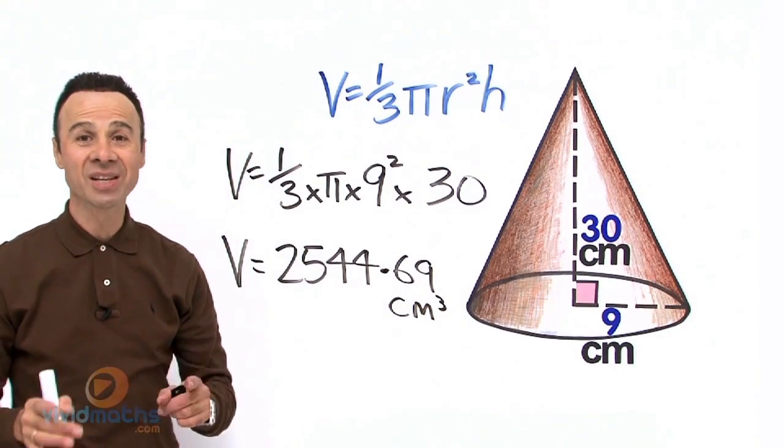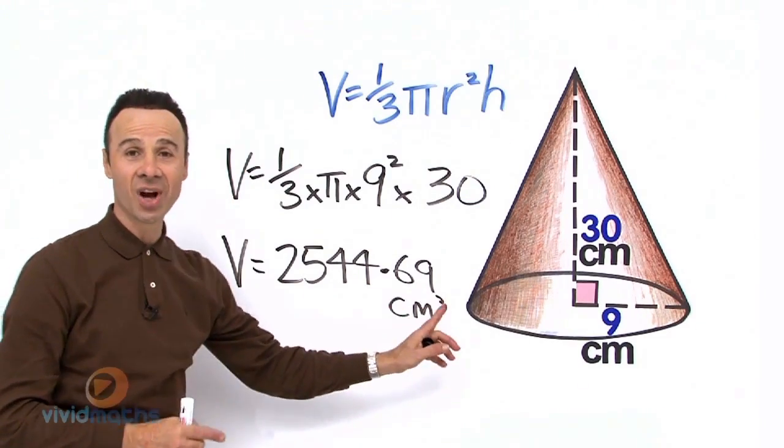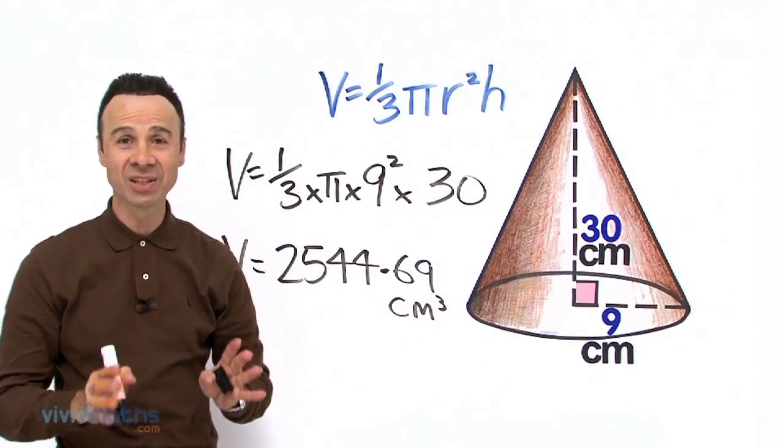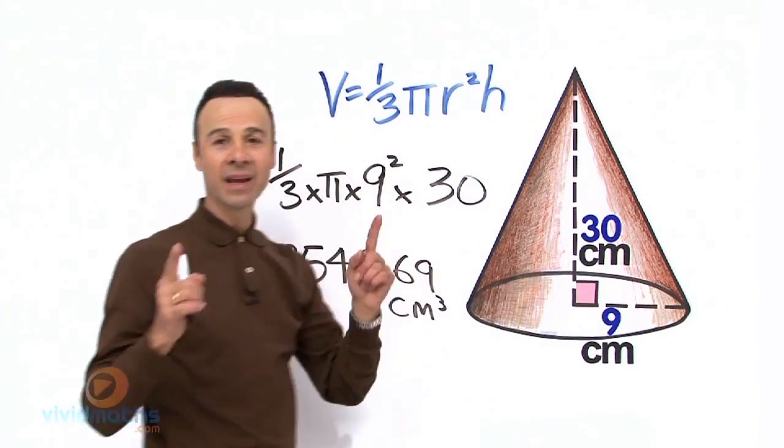So we are going to need to round. Which way? Up, right, because it is 0.69. So let's round it up to the nearest centimeter cubed. The total volume and content and capacity in this solid is...